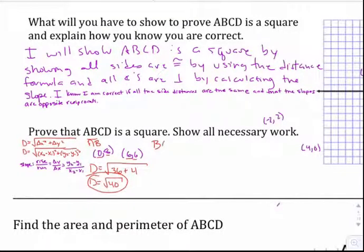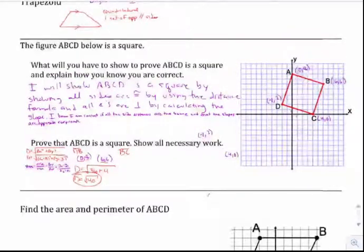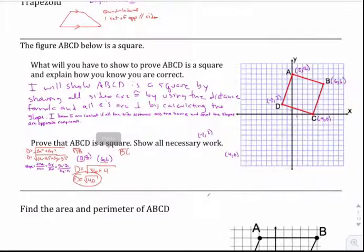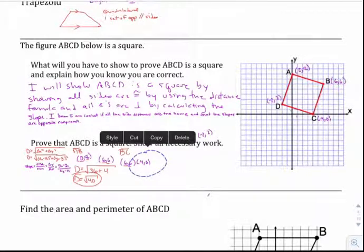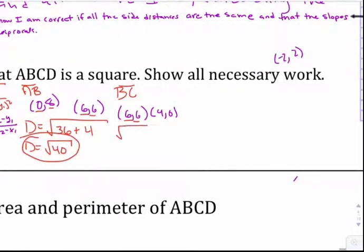Let's find BC now. B goes from (6, 6) and C is at (4, 0). Using the distance formula: my x's go from 6 to 4, that's a difference of 2 — square it, you get 4. My y's go from 6 to 0, that's a difference of negative 6 — square it, you get 36. So that distance is also the square root of 40.